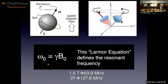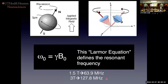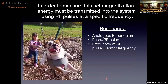The frequency of precession is equal to the gyromagnetic ratio — which is different for any single nucleus — times the magnetic field strength. So if you're in a 1.5 tesla, your protons are precessing at 63.9 megahertz. You get into 3 tesla and it's twice the frequency. So now I've covered why it's nuclear and why it's magnetic — let's talk about resonance.